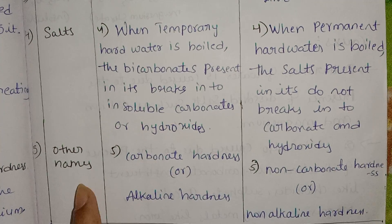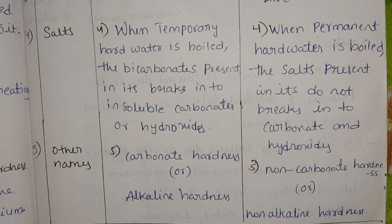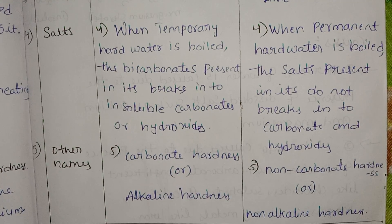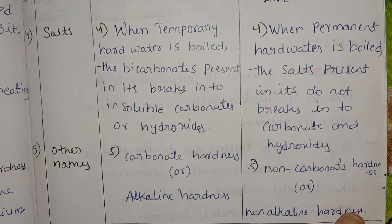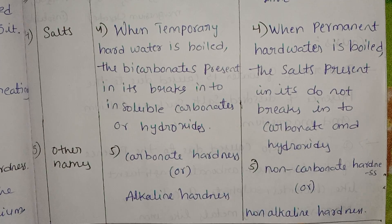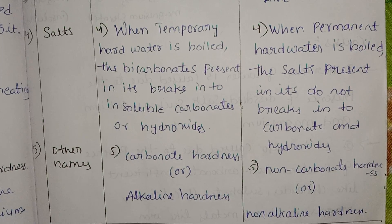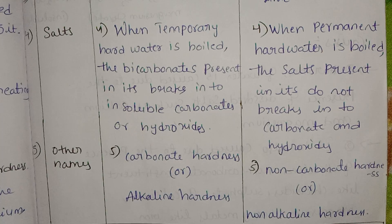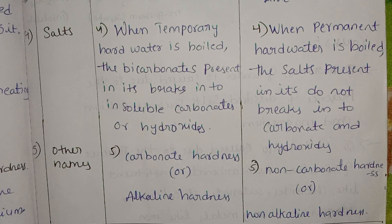Another name for temporary hardness is carbonate hardness or alkaline hardness. Another name for permanent hardness is non-carbonate hardness or non-alkaline hardness. You can see the difference between temporary and permanent hardness from these points.